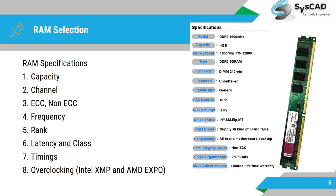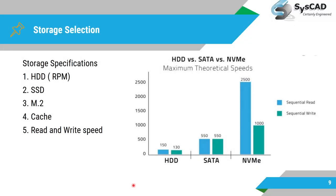For storage options, you have hard disk drives, solid state drives, M.2 SSDs, M.2 SATA, and NVMe types. Consider the cache memory of the storage device and read/write speed. Hard disks have very low data transfer rates compared to SSDs, and NVMe drives are the latest with very high bandwidth for both reading and writing data.